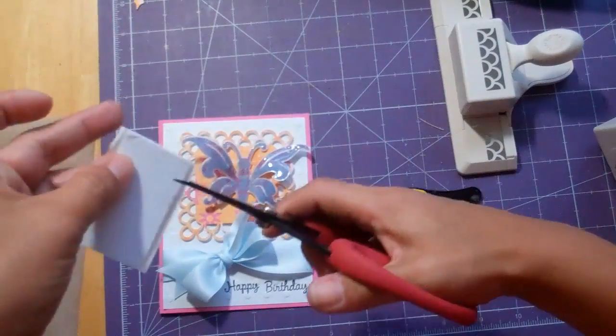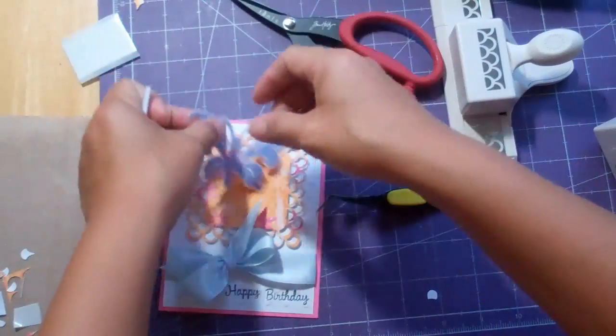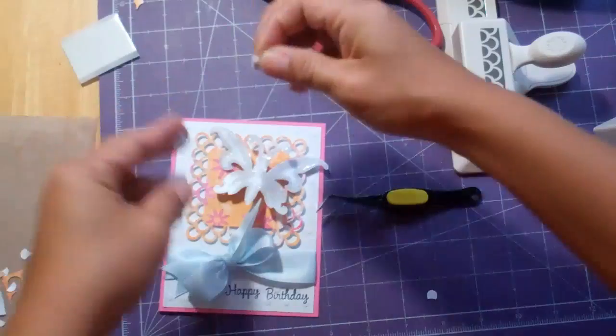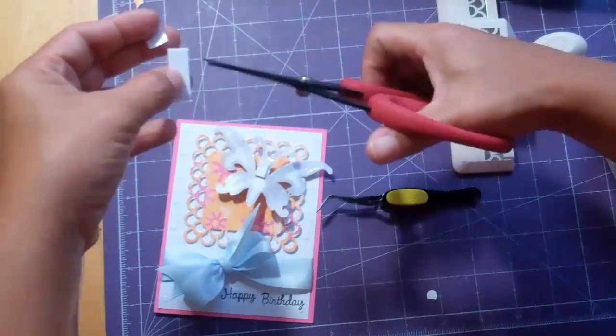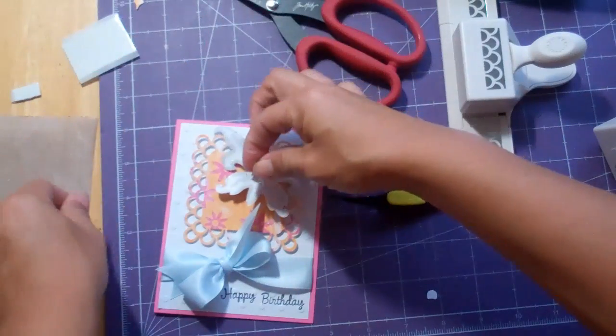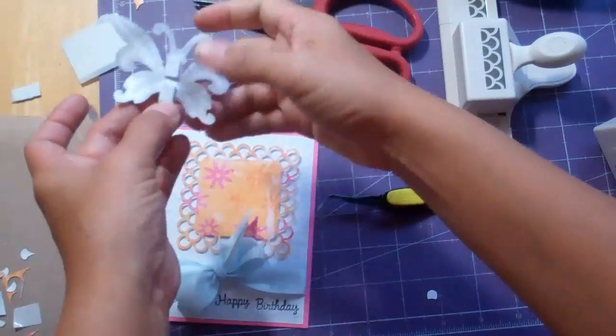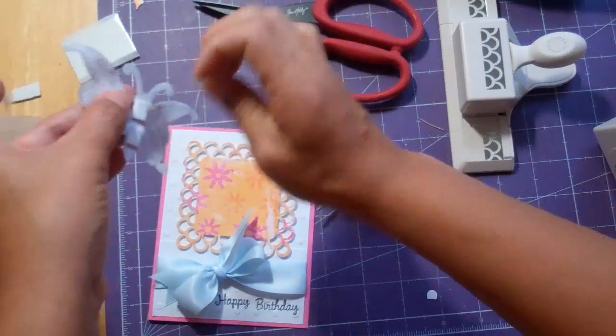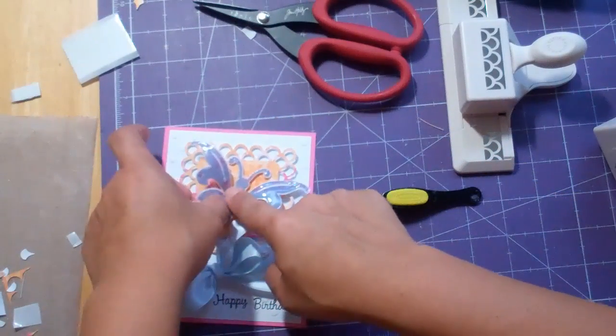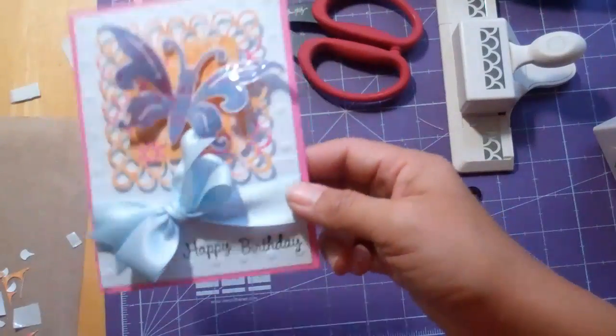And the sentiment is one of those Studio G stamp sets from I think it was Michaels. Just in the center, I just added the dimensionals to the center. And there you go, simple card. Thanks for watching, bye.